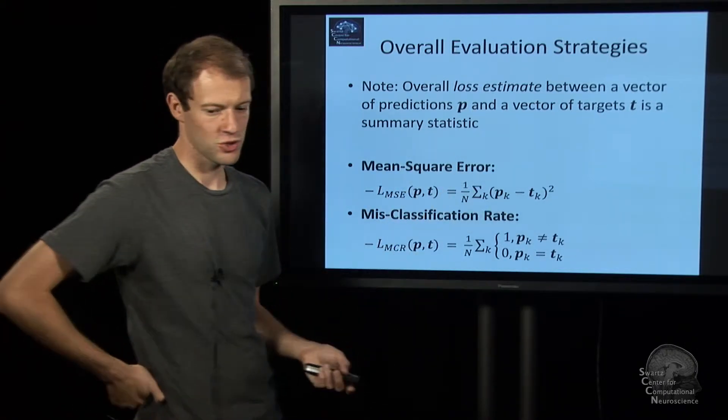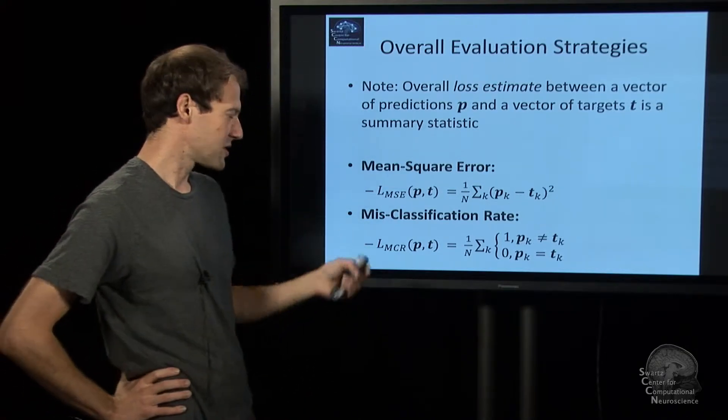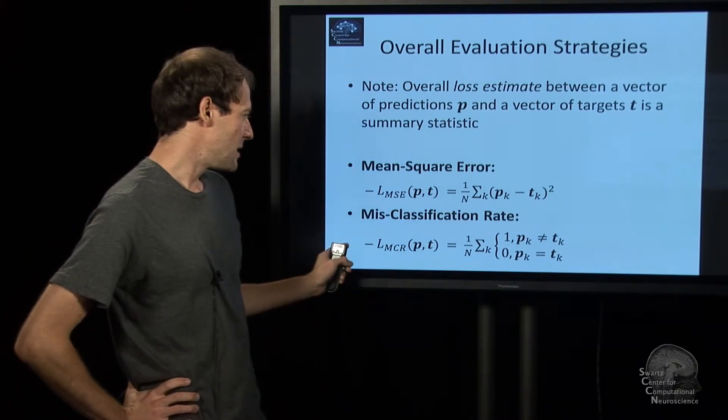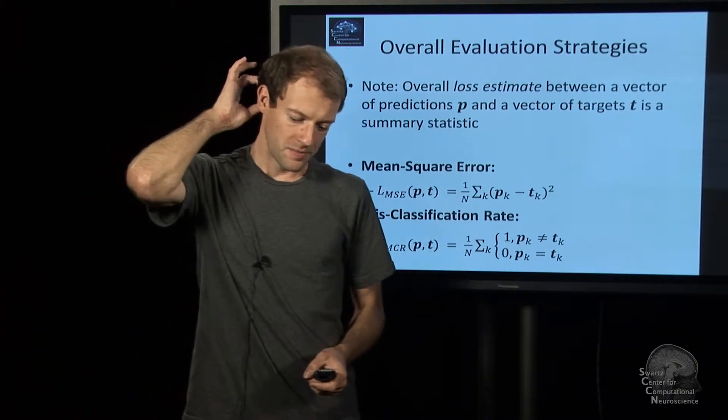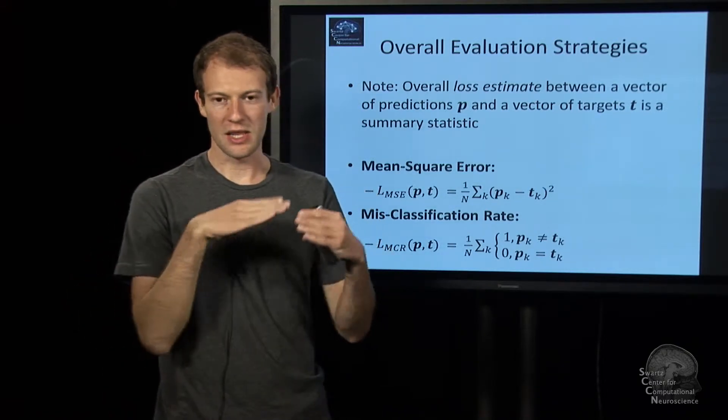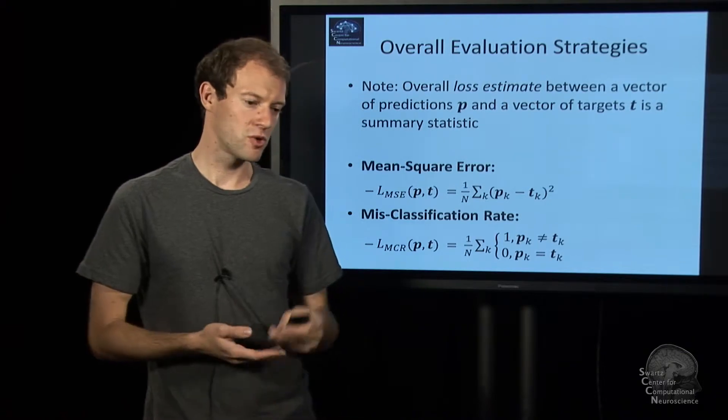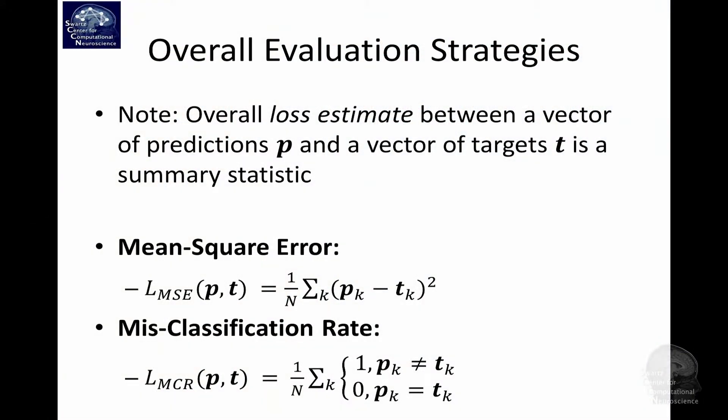For example, mean square error measures average squared offset from the known labels. And misclassification rate is useful for classification settings where you produce a discrete output, class one, class two, or so. Here's the two class case. So that's a way to measure the average fraction of misclassified trials.